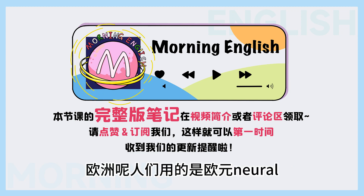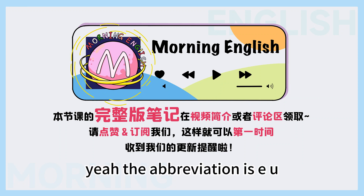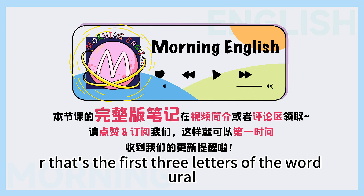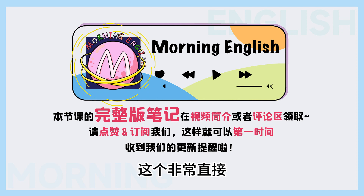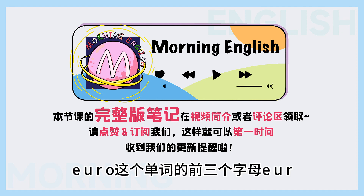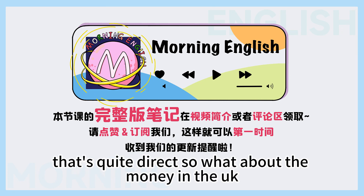那說回我們剛剛的貨幣縮寫。歐洲人們用的是歐元 euro，那縮寫應該也不一樣吧？ Yeah, the abbreviation is EUR — E-U-R, that's the first three letters of the word euro. 這個非常直接，就是euro這個單詞的前三個字母，E-U-R.